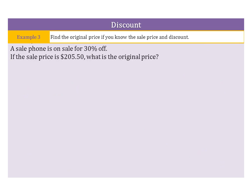Now, in our next example, we want to find the original price if you know the discount and the sale price. So, as we read example 3, a cell phone is on sale for 30% off. If the sale price is $205.50, what is the original price?